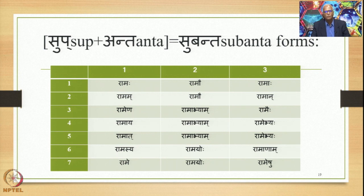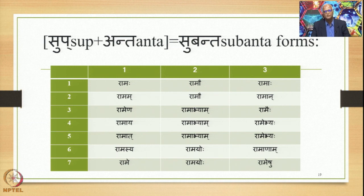The meaning of these words is a combination of the Pratipadika and its Artha — namely Rama — and the Pratyayartha of Su, and its co-occurrence. Similarly, Ramau: the meaning of this word will be a combination of the meaning of Rama the Pratipadika and Au the Pratyaya — Prakrityartha and the Pratyayartha — and also their co-occurrence. This will happen in all the 21 forms.